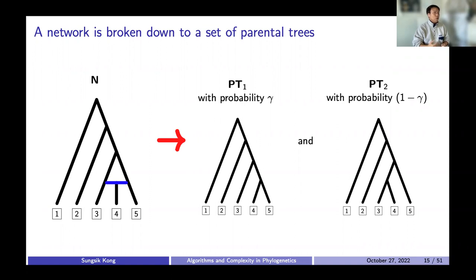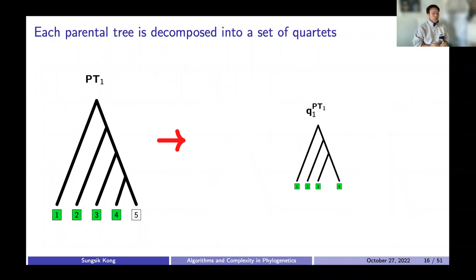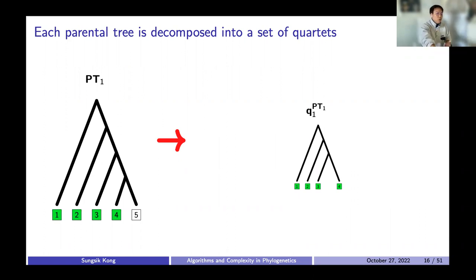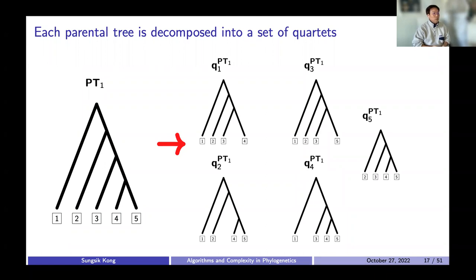The first thing we want to do is break a network down into a set of parenter trees, and we do so by removing one of two incoming reticulation edges at a time. Each parenter tree will have a probability obtained by multiplying all of the inheritance probabilities assigned to the reticulation edges that are not deleted in the production of that particular parenter tree. So here, our network N is broken down into two parenter trees where parenter tree one has a probability of gamma and parenter tree two has a probability of one minus gamma. For each of these parenter trees, we further decompose down to a set of quartets — simply a tree with four tips — by selecting four tips from the parenter tree at a time along with the internal tree vertices representing the most recent common ancestors for the pairs of taxa. By selecting species one, two, three, and four from parenter tree one, we get our first quartet. We repeat this process for every possible combination of four from the parenter tree, extracting five quartets from parenter tree one and another five from parenter tree two.